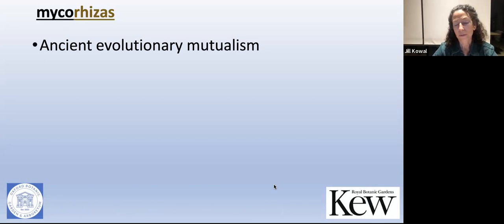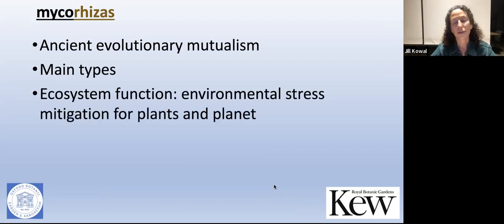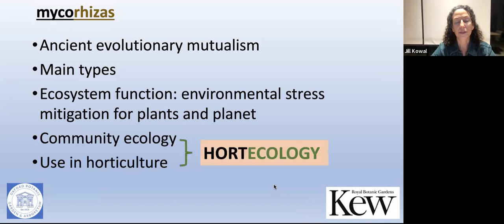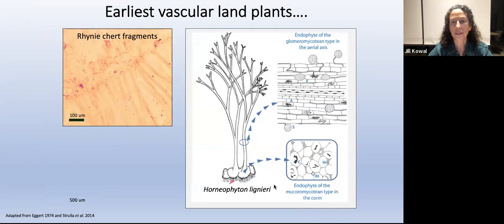Very briefly, an overview of what we'll look at tonight: the ancientness of these mutualisms, the many types of mycorrhizas, their ecosystem function, community ecology, and the use in horticulture — all brought together into what I'm calling hort ecology. Our earliest preserved records, from the Rhynie chert in Scotland — aged over 450 million years — show incredible ultra-structural detail of both non-vascular and vascular plants.